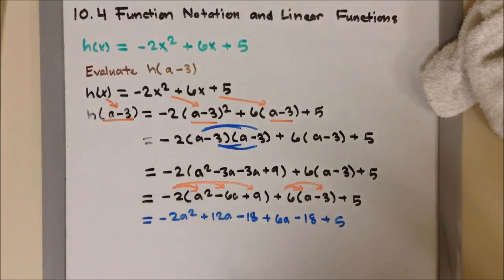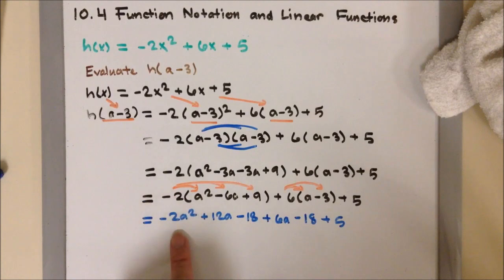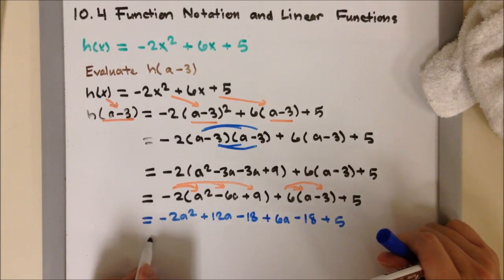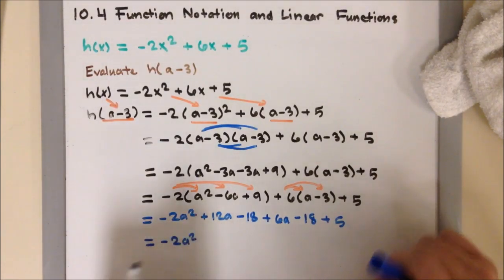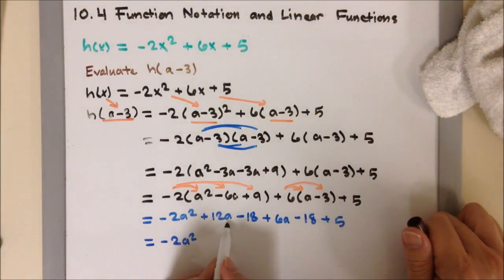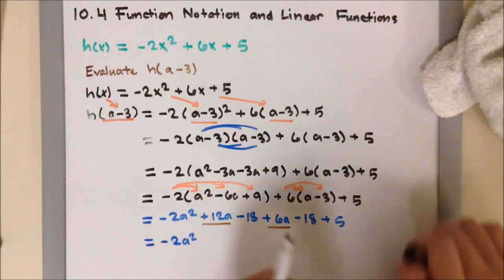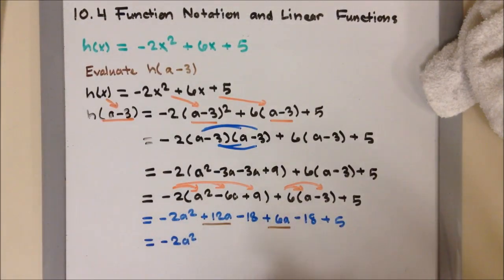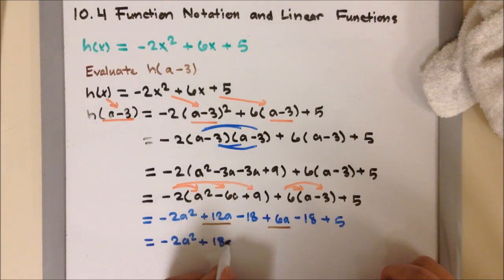Alright, now it's time to combine our terms. I don't have any other A squares. So I'm just going to bring down the negative 2A square. Now, let's take a look at our A's. I do have 12A here and a 6A. Okay, so I'm going to combine them. So positive 12 plus 6 will be plus 18A.